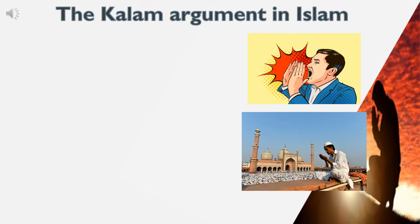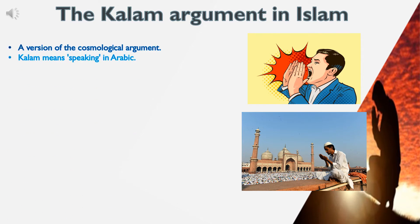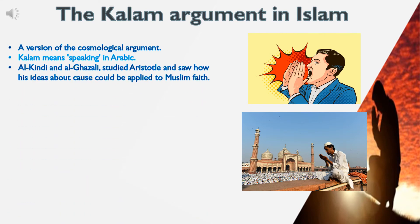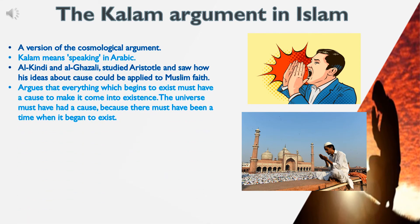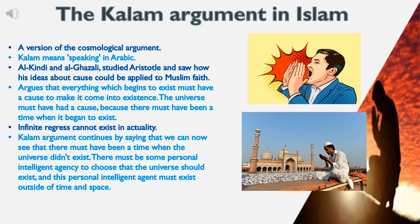The Kalam Argument in Islam. The Kalam argument is a version of the cosmological argument — 'Kalam' means speaking in Arabic. Al-Kindi and Al-Ghazali studied Aristotle and saw how his ideas about cause could be applied to Muslim faith. The argument states that everything which begins to exist must have a cause to bring it into existence. The universe must have had a cause, because there must have been a time when it began to exist. Infinite regress cannot exist in actuality. Therefore there must have been a personal intelligent agency to choose that the universe should exist, and this agent must exist outside of time and space.